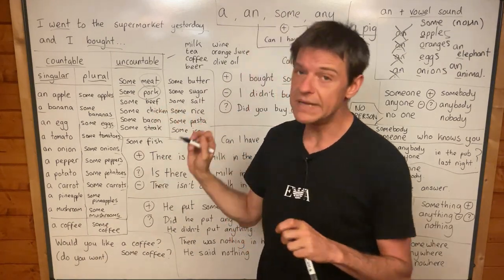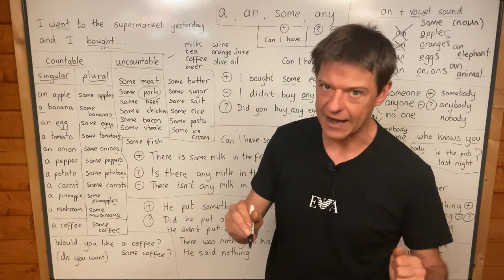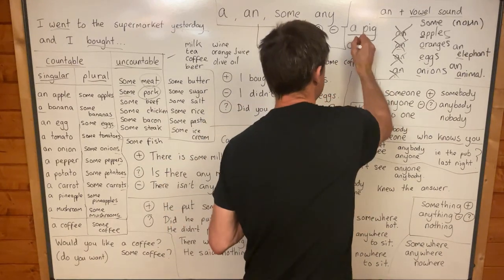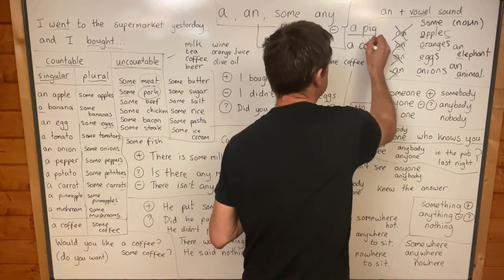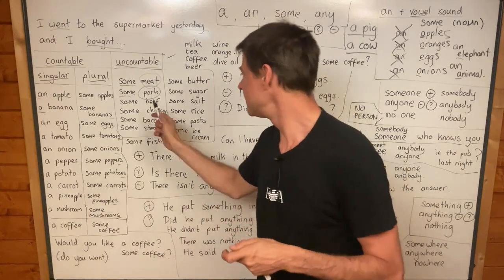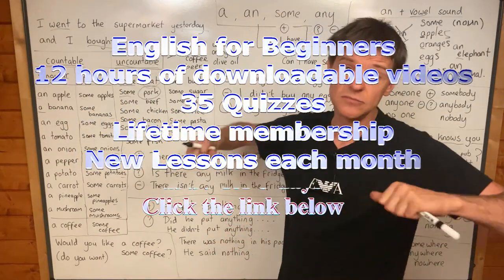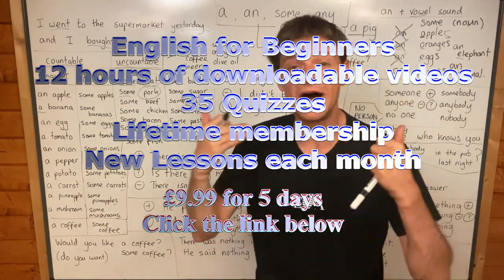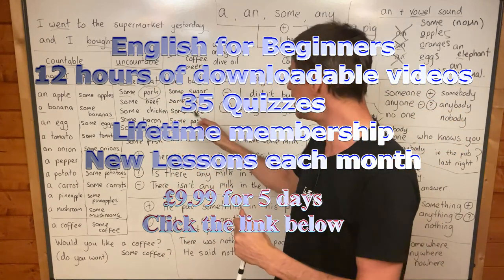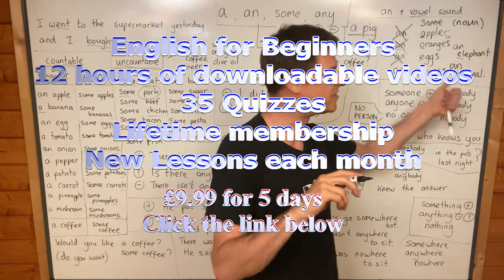Beef is meat from a cow — not pig, from a cow. Beef. Some beef. Some chicken. Chickens give us eggs.